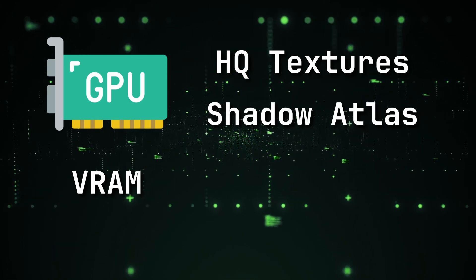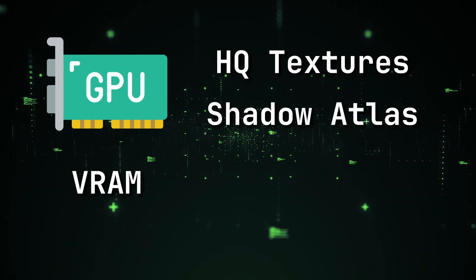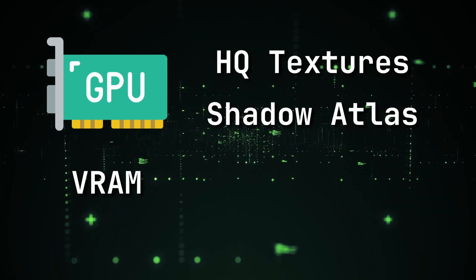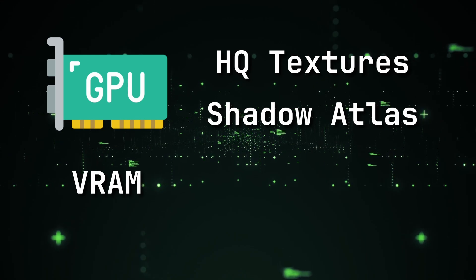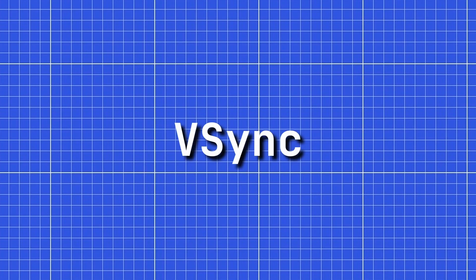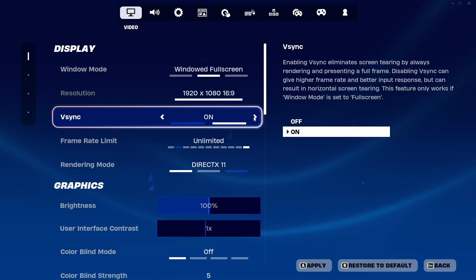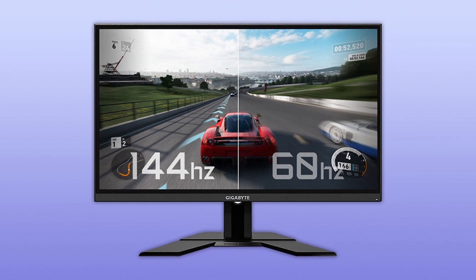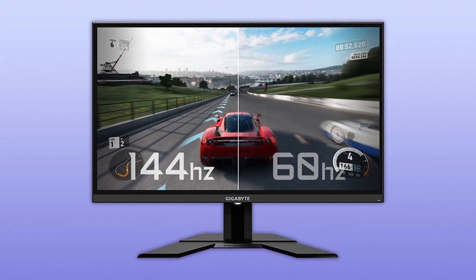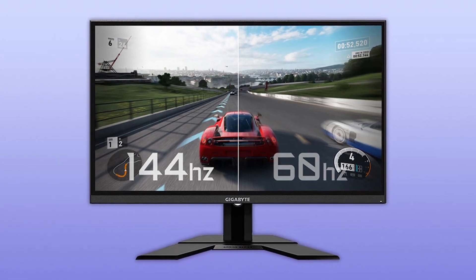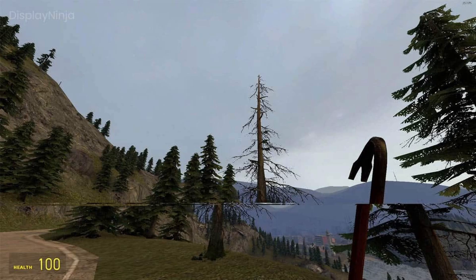Settings like texture quality and shadow quality are a big taxation on VRAM. Starting with V-Sync: V-Sync plays a significant role in synchronizing frame rates with the monitor refresh rate to prevent screen tearing.